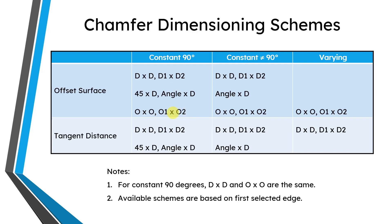I'll talk about O by O and O1 by O2 in a little more detail — this is where stuff gets a little weird. In a previous video, I talked about the two different creation methods you have for chamfers. The default is Offset Surface, and that's what you can use the overwhelming majority of the time. There are some subtle differences if you're using the Tangent Distance option, which really comes into play when you are trying to chamfer an edge formed by surfaces that are non-planar or non-analytic.